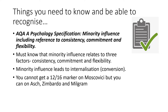Minority influence leads to internalisation, which means conversion - you're publicly and privately agreeing with whatever it is that you believe. Also, you cannot get a 12 or 16 mark question on Moscovici. I'm going to go into Moscovici's study in more detail than the textbook does. But you can get this 16 or 12 mark question on Asch, Zimbardo and Milgram - on any spread of the textbook. Moscovici cannot be asked for marks because the specification doesn't specifically name him, but you can use Moscovici for AO1 of this spread, as it gives nice padding and enables a lot more AO3 points.